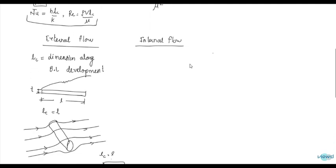For internal flows, Lc is equal to 4 times the cross-sectional area divided by the wetted perimeter. This is the same as the case in fluid mechanics — please watch that video for a deeper understanding.